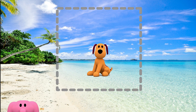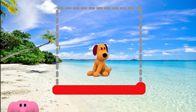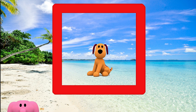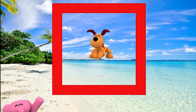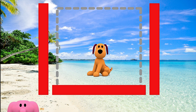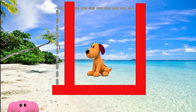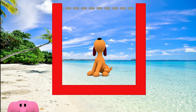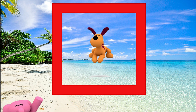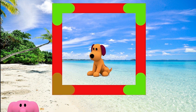Square! Four equal sides make a square. Put the shape back together. One side, two sides, three sides, four sides. And a square has four corners.